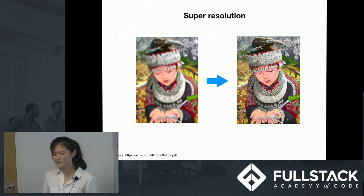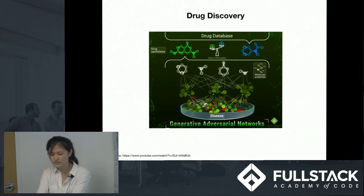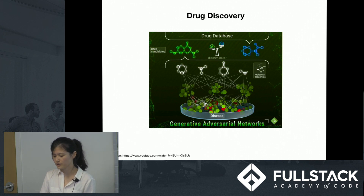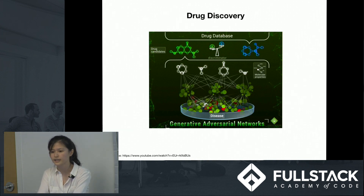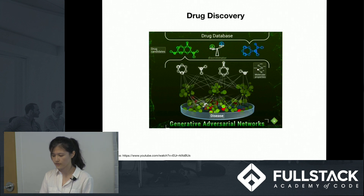GANs can also generate high-resolution images from low-resolution ones. In the medicine field, privacy concerns limit the amount of available data. GANs can fill in the missing data, making it possible to produce entirely fabricated patient databases. The idea is to train the generator to sample drug candidates for a given disease as precisely as possible to match existing drugs from a drug database.